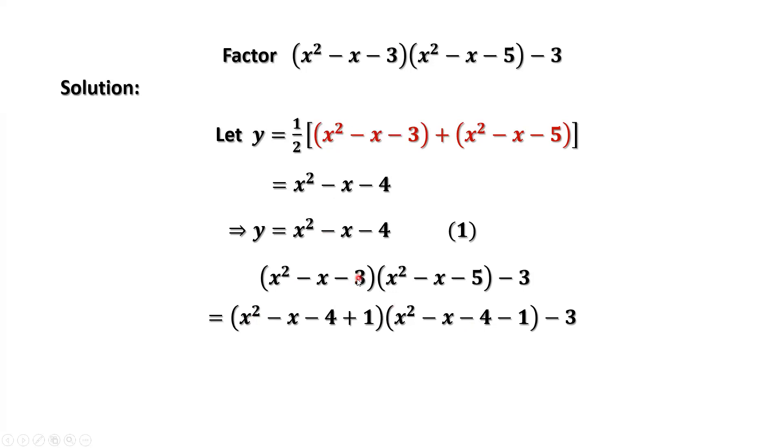We can rewrite negative 3 as negative 4 plus 1, which is negative 3. Negative 5 equals negative 4 minus 1, which is negative 5. Because y equals x squared minus x minus 4, therefore this part is y and this part is y2.